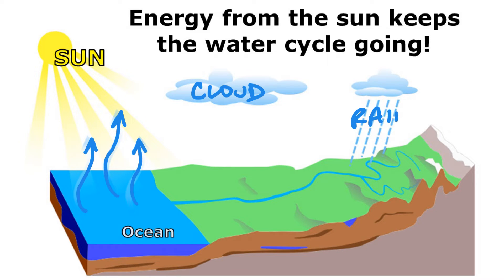Eventually that water falls back to earth in some form of precipitation, usually rain, and runoff carries that water back into bodies of water like the ocean, where the sun makes it evaporate again. The sun causing water to evaporate over and over again is what keeps the water cycle going.